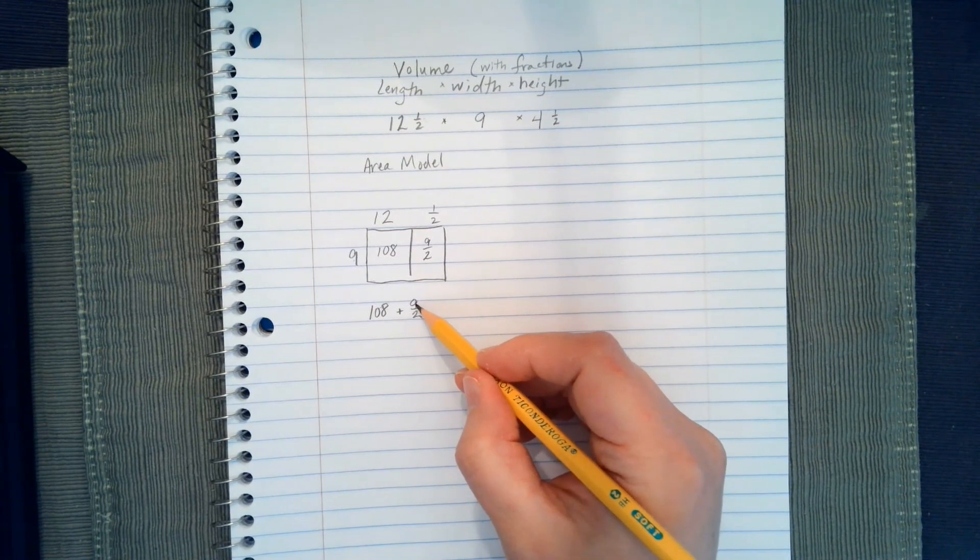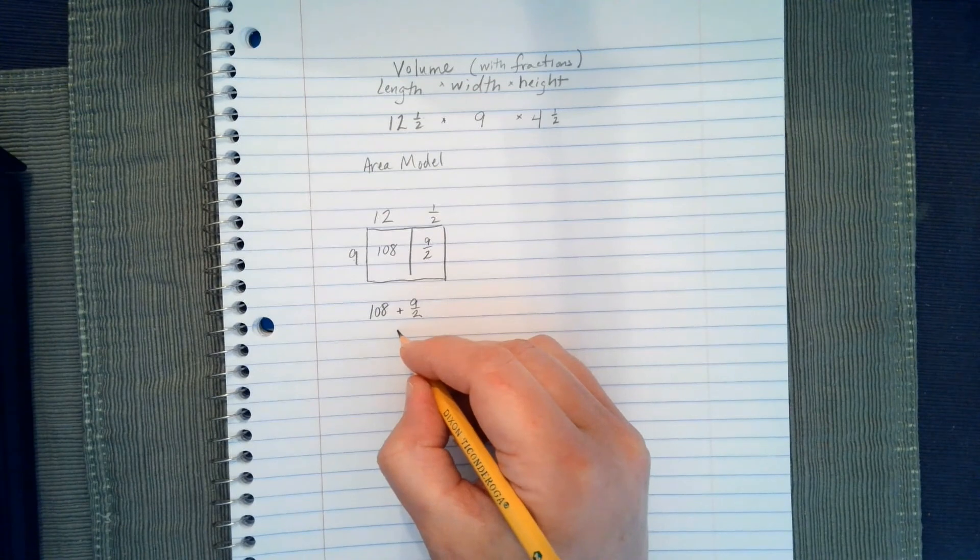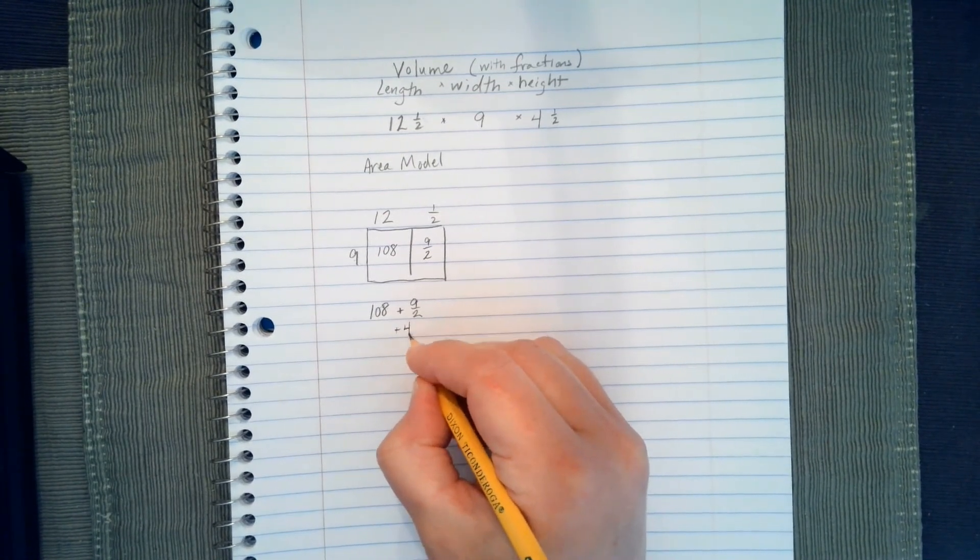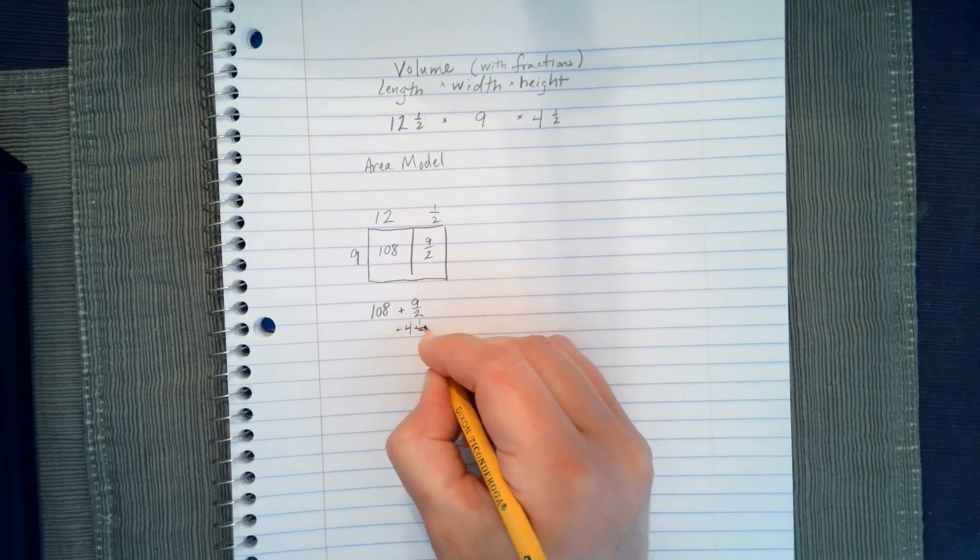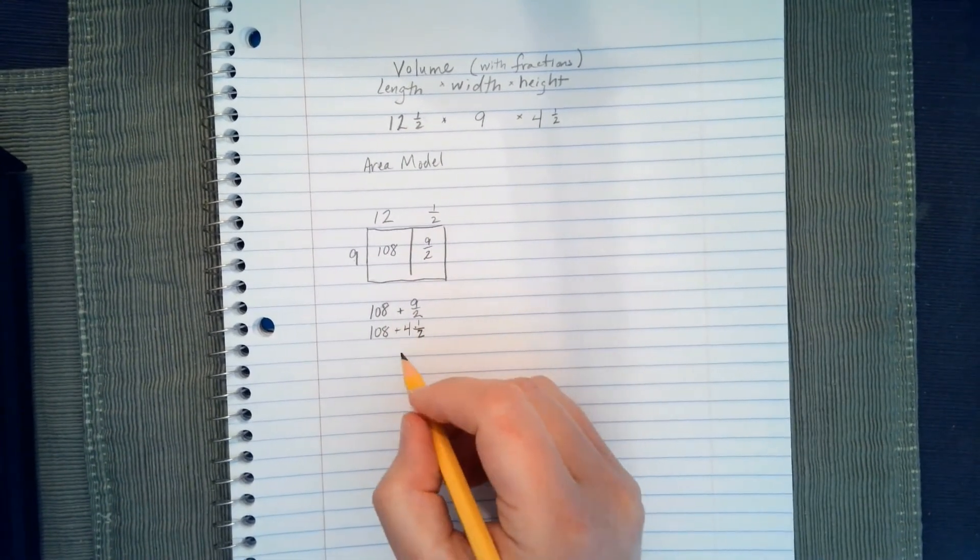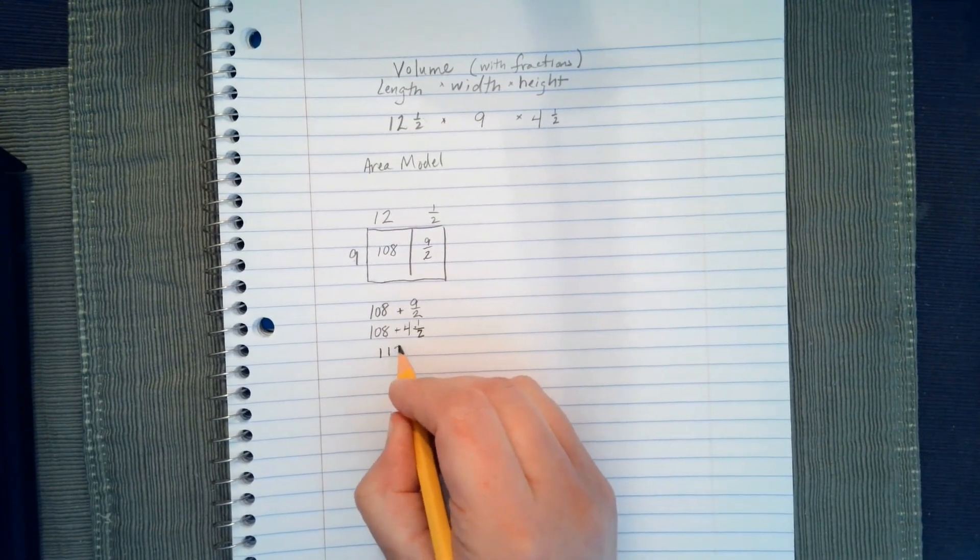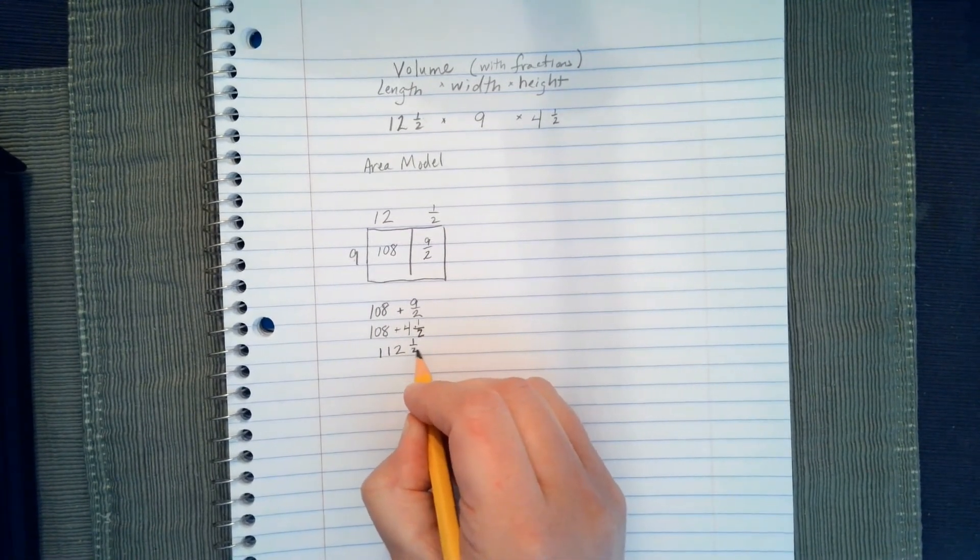We're going to change the 9 halves to a mixed number, 2 will go into 9, 4 times, and we'll have 1 left over, so it'll be 108, plus 4 and a half, 108 plus 4 is 112, and 1 half.